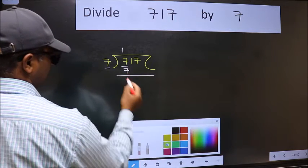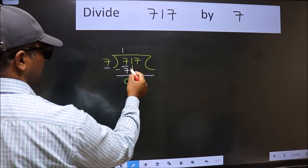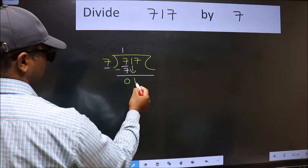Now we should subtract. We get 0. After this bring down the beside number. So 1 down.